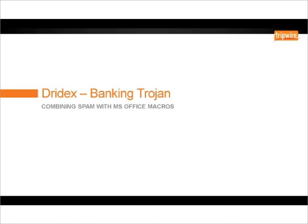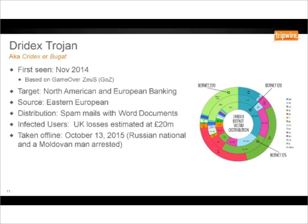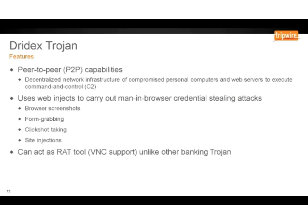Something more consumer-based: the Dridex banking trojan looked like it was going to be good news, as it was taken offline back in October. A Russian national and a Moldovan man were arrested, and the source is very likely Eastern European. But I've read in the last couple of days that somebody has resurrected the command and control network. Within the UK, it's estimated that up to 20 million pounds worth of money was stolen from UK users.